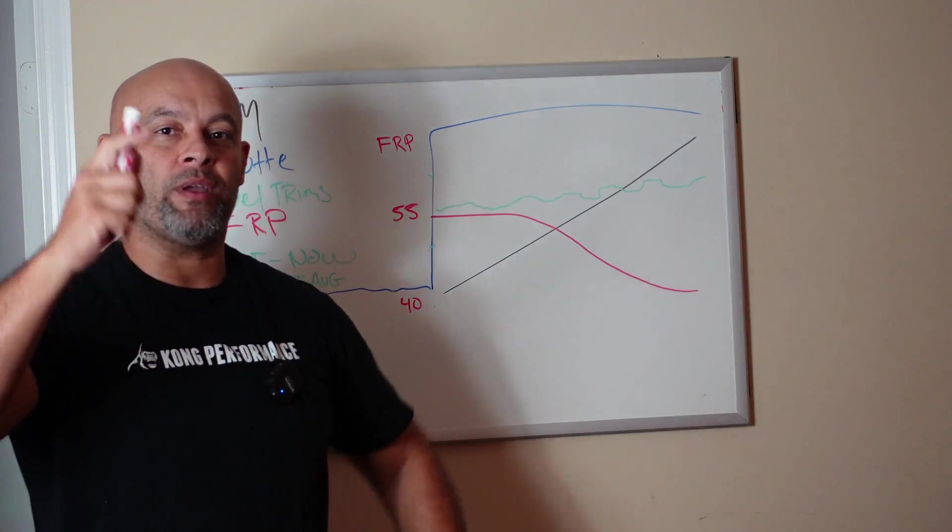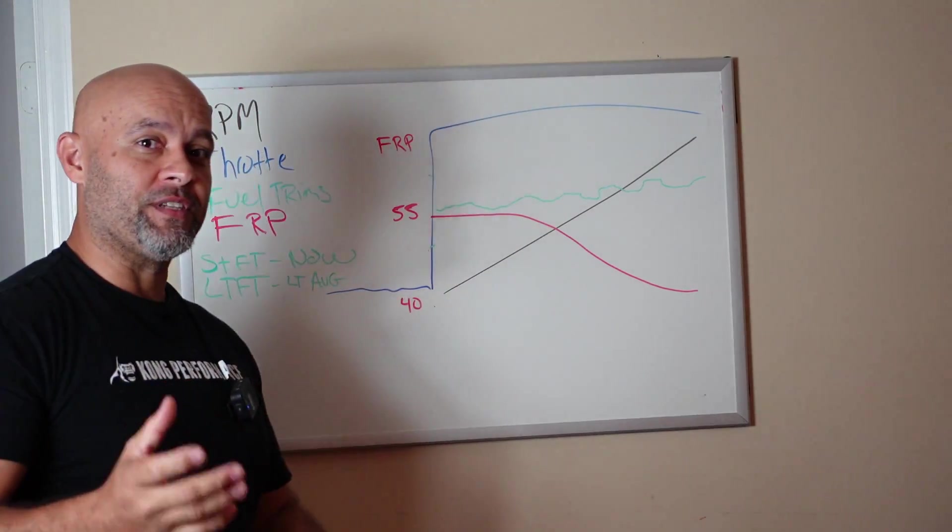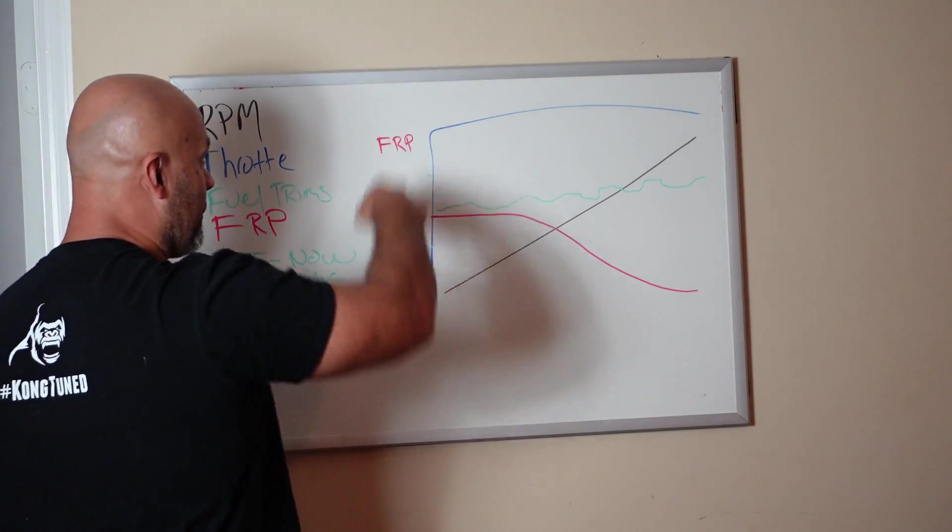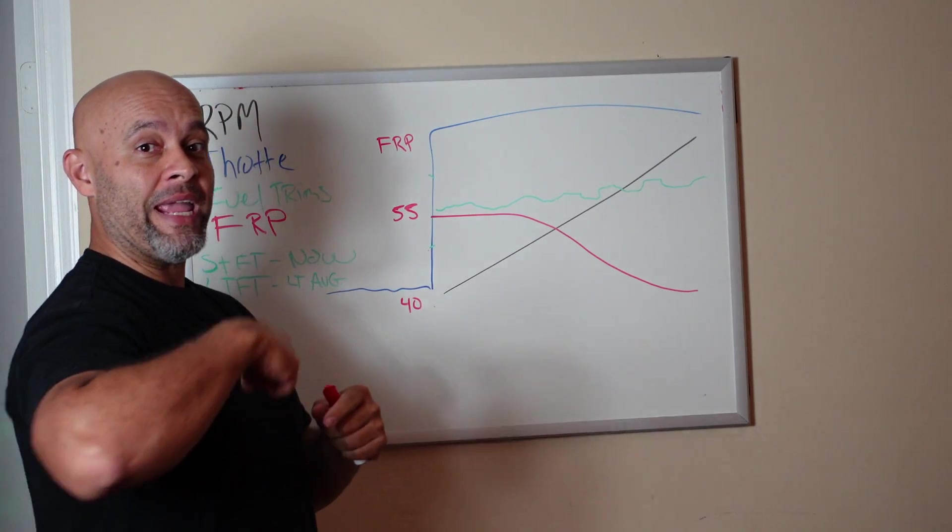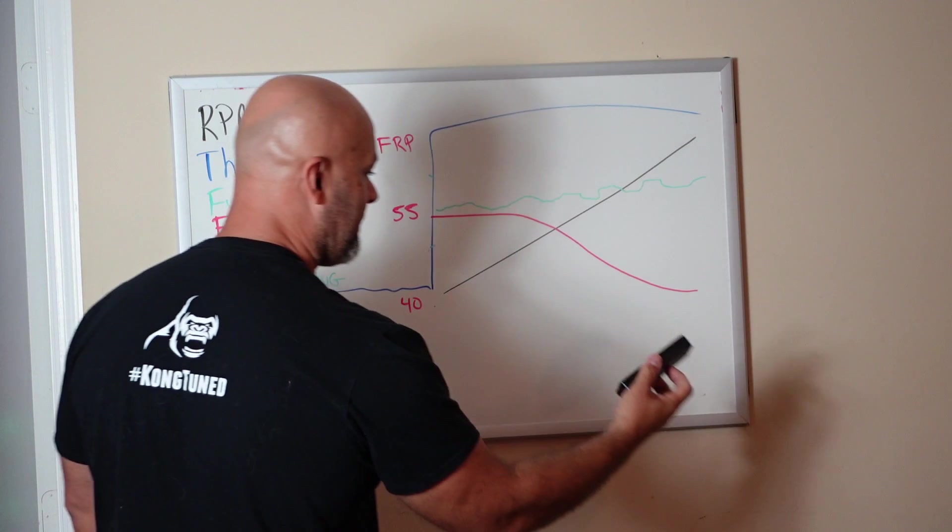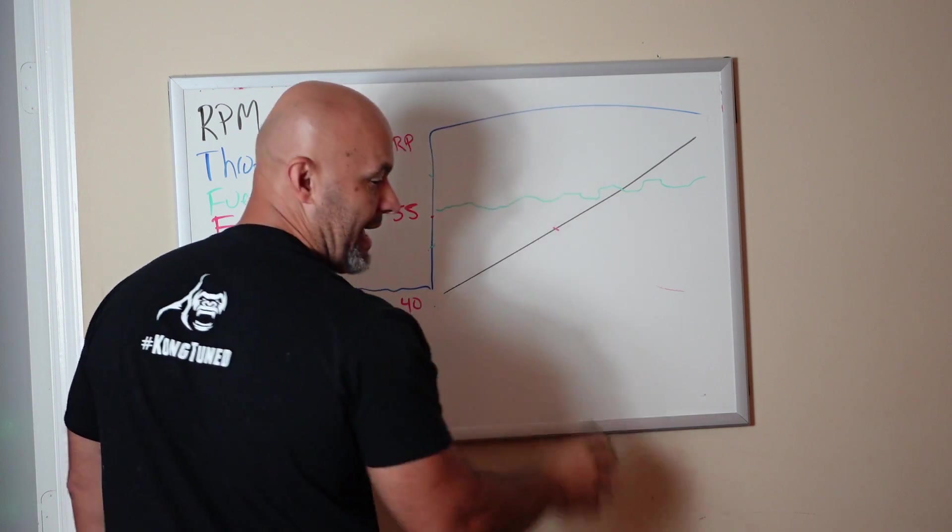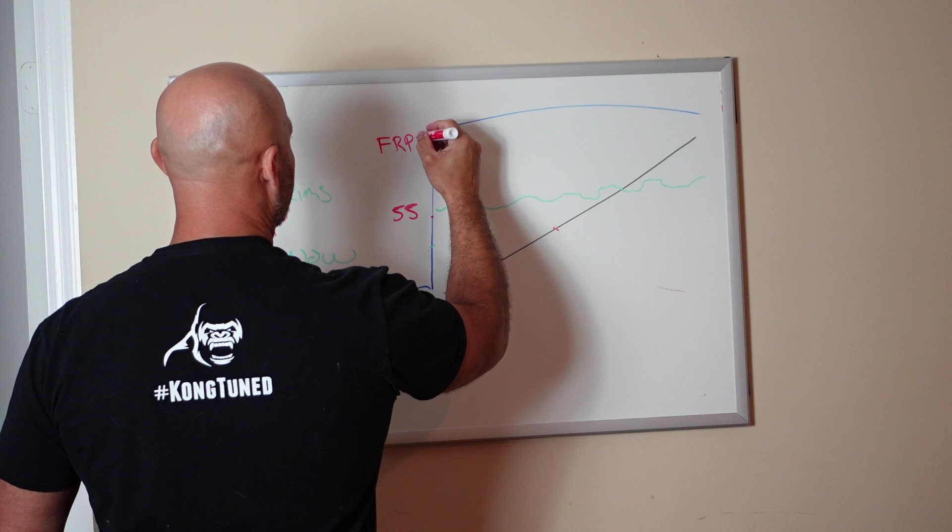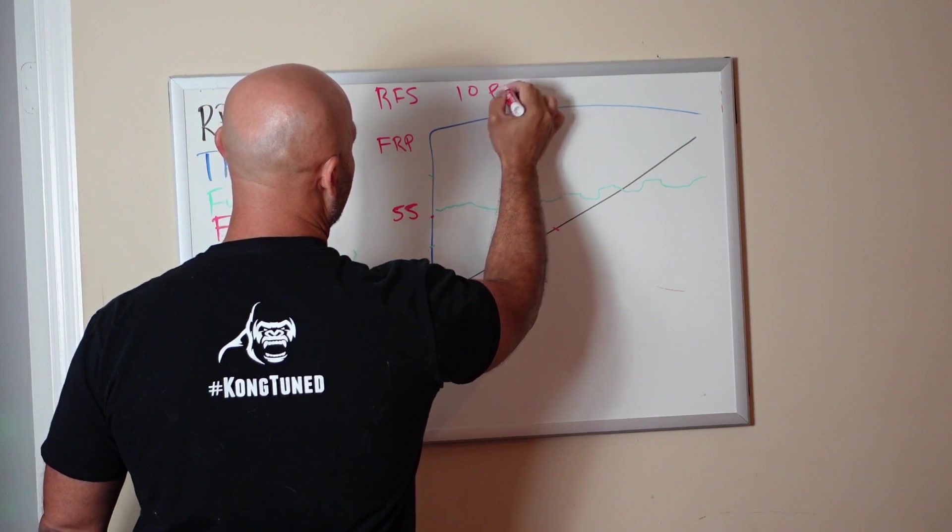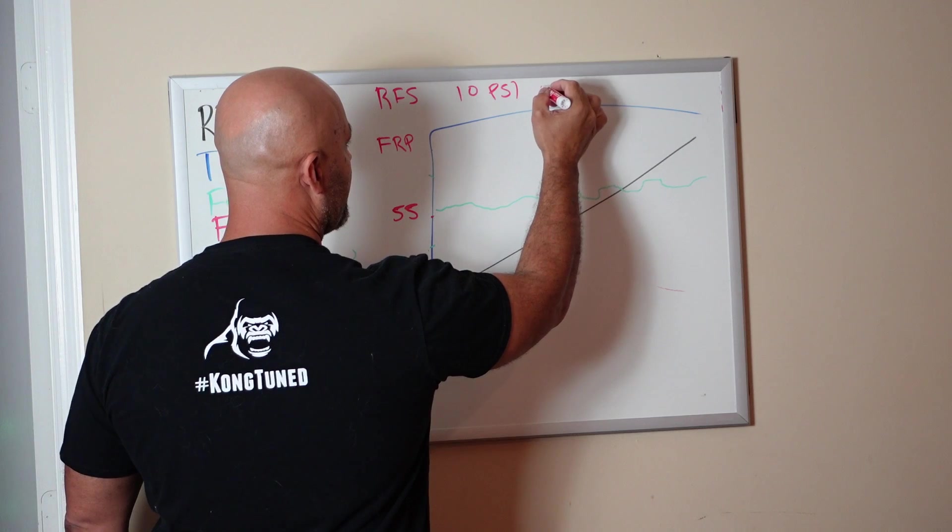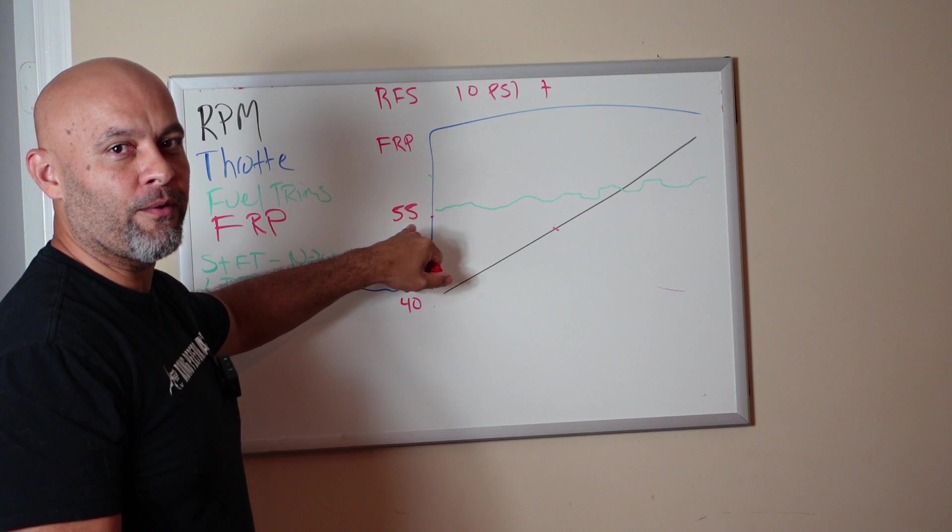On return style fuel systems, I have seen return style fuel systems still have a pressure drop, which tells me that the fuel systems are not adequate. Or boost referencing—boost referencing the fuel rail pressure regulator. If it does not have a vacuum boost source, it doesn't raise pressure one-to-one. So if you have a 55 psi base on a Mustang return style fuel system and you give me 10 psi.